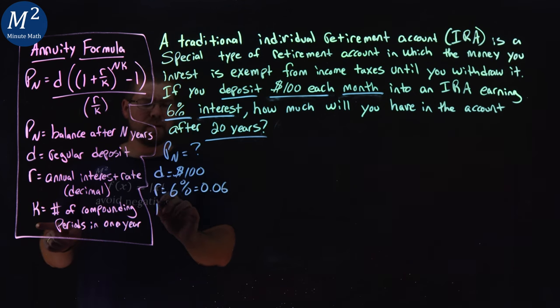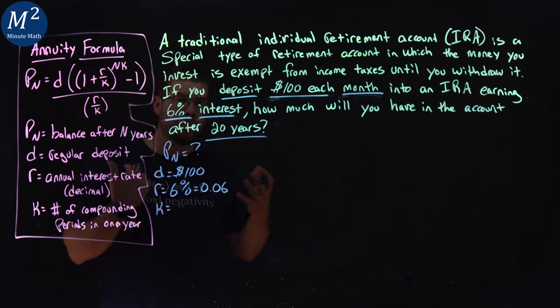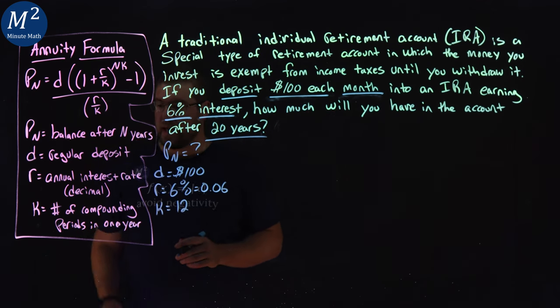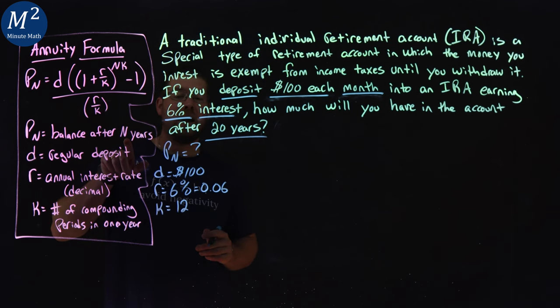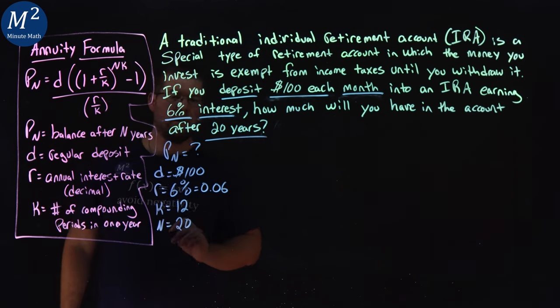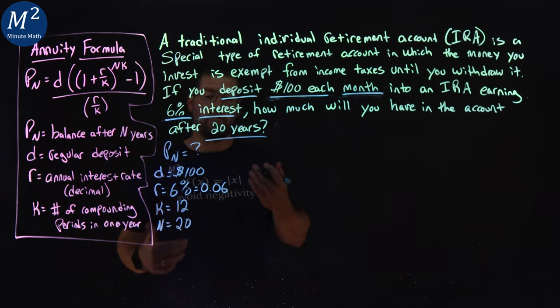And our compounding periods here is how often are we depositing? This is every month. We have 12 months in a year. And our end value, how many years we're looking for, is 20. So now we have identified all the key parts here.